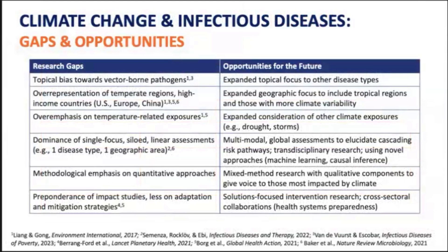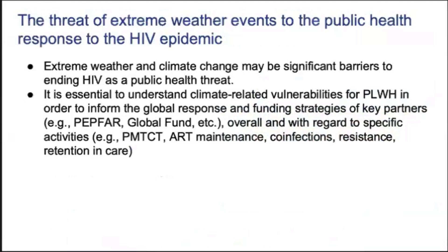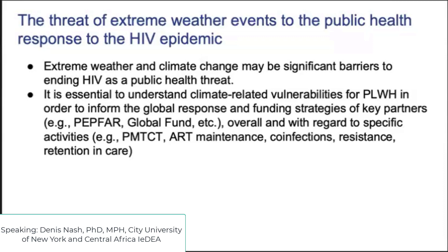I'm going to transition to Dennis, who is going to talk about our study in the context of HIV. I'm going to drill down a little further into the literature on extreme weather and HIV-related outcomes, and share the aims of our climate-related projects linked to the IDEA cohort collaboration. Given the geographic overlap of extreme weather and the HIV epidemic, the impact of extreme weather on populations and infrastructure really threatens to limit the impact of the public health response to the HIV epidemic, making it essential for us to understand more about the specific areas of vulnerability so that the global response can adapt accordingly.